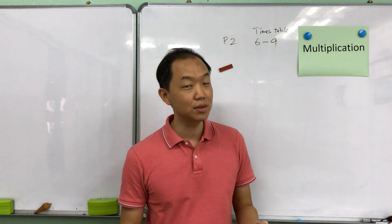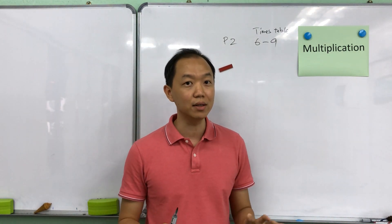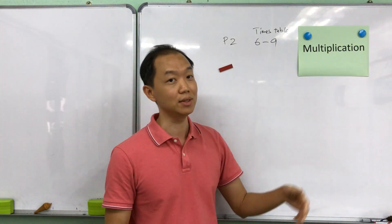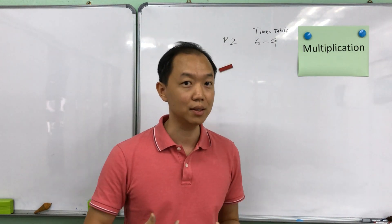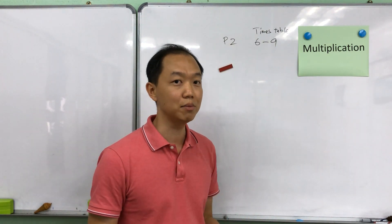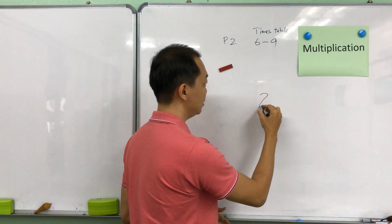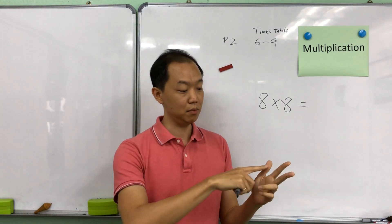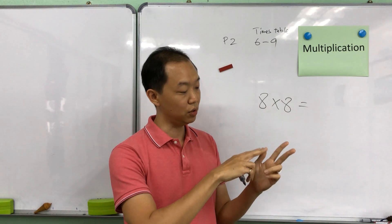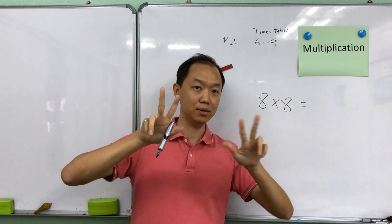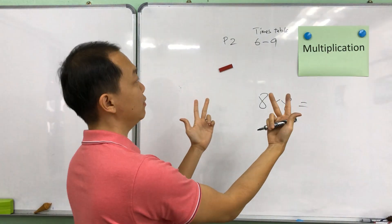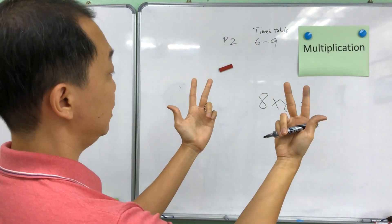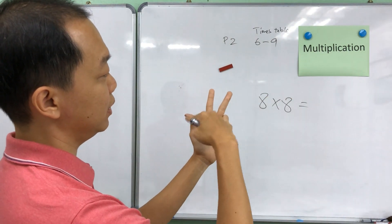This video is for P2 students or even P1 students who are already very good with those 1 to 4 or 1 to 5 times table. And they want to go more like the 6 to 9 times table. So what we do is we use the finger method to help them to remember. I'm just going to demonstrate one. So for example if I want to do 8 times 8, what we have to do is to just show 8 on the left and 8 on the right. So this is like 8 and 8. This is 8 times 8. So if I need to multiply 8 with 8, now look at how many fingers are pointing up.